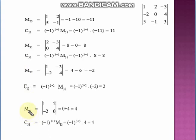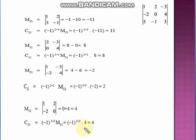Now see M33: the minor of A33. Omit this particular column and row and evaluate the remaining 2×2 determinant to get the minor. Then C33 = (−1)^(3+3) × M33 = (−1)^6 × 4 = +1 × 4 = 4. So to find cofactors, first find the minor of each element, then multiply the minor by (−1)^(i+j) to get the cofactor.